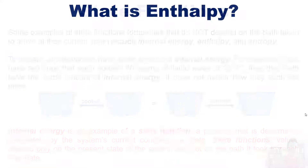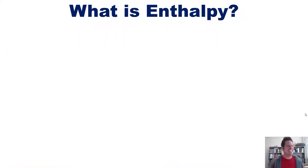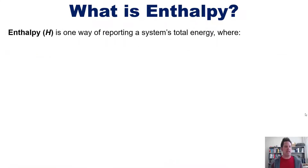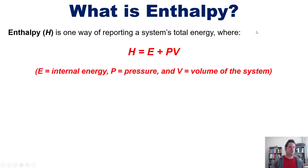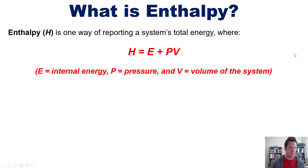So, what is enthalpy? Enthalpy — for which we use the letter H because the letter E was stolen by energy, sorry, poor enthalpy — is one way of reporting a system's total energy, where enthalpy H is equal to E plus P times V, in which E is the internal energy of the system, P is pressure, and V is the volume of the system.